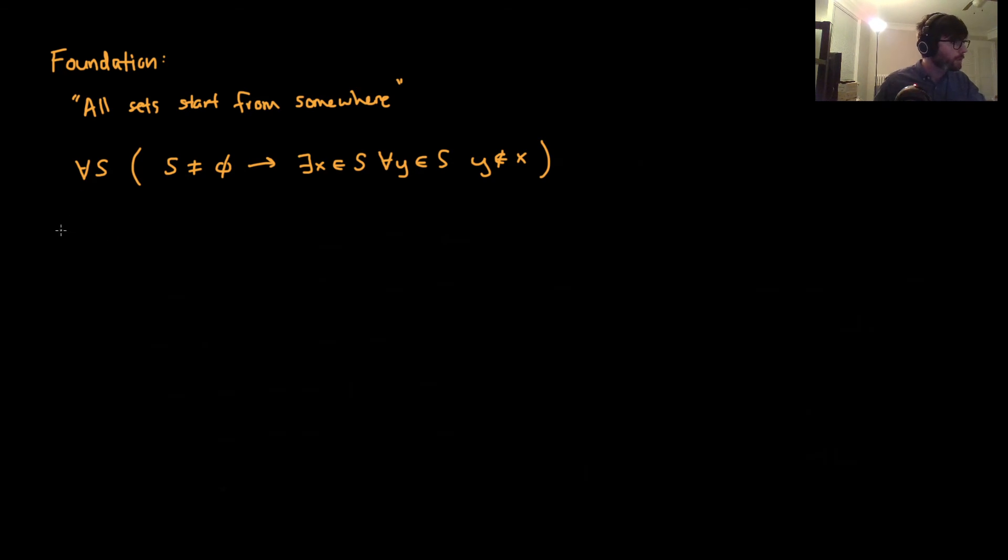One consequence of this, for example, and it's also what I mean when I say that all sets start from somewhere, we don't have more pathological sets that might exist something like this. So here's an example. There is no set Z such that Z is the set containing itself.